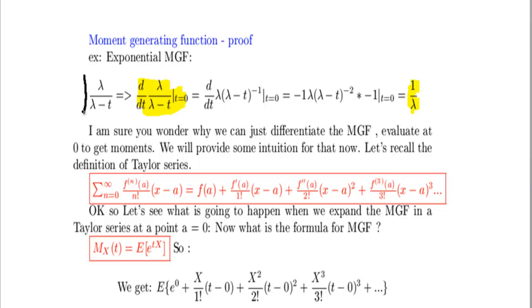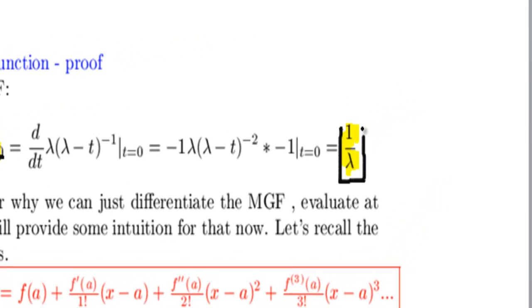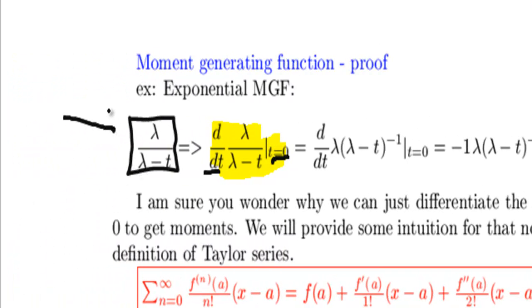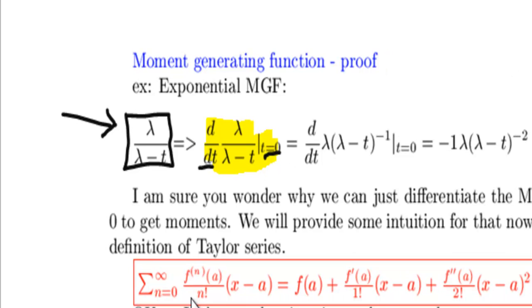For instance, here I have the moment-generating function of the exponential distribution. I take the first derivative, evaluate it at zero, and guess what? I get the mean, i.e. the first raw moment. So what is so special about this function that when we take derivatives and evaluate it at zero, we get moments? Let's see. To prove this fundamental property, we need to be familiar with a Taylor expansion.